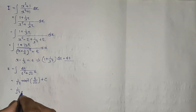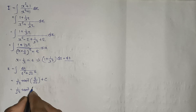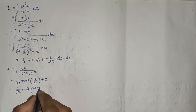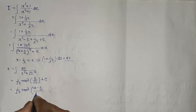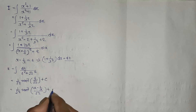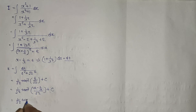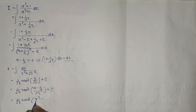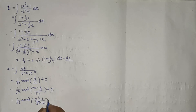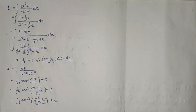The answer is (1/√2) · tan⁻¹((x - 1/x)/√2) + C, which simplifies to (1/√2) · tan⁻¹((x² - 1)/(√2·x)) + C. That is our answer.